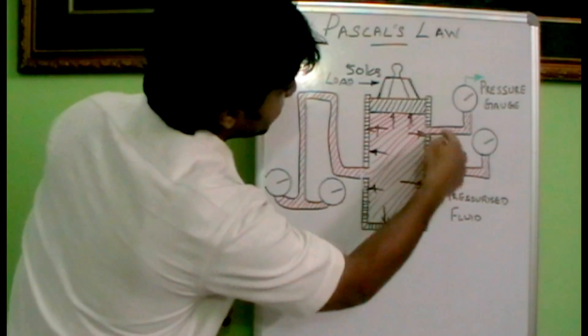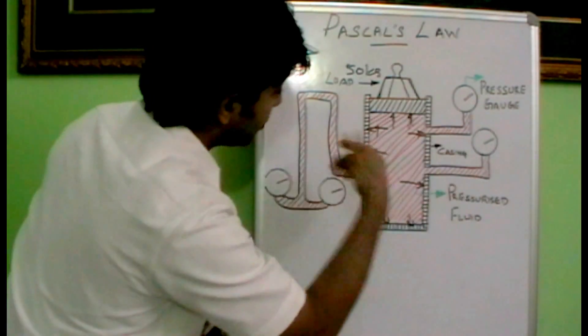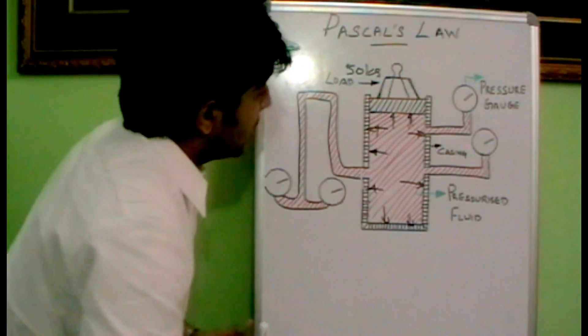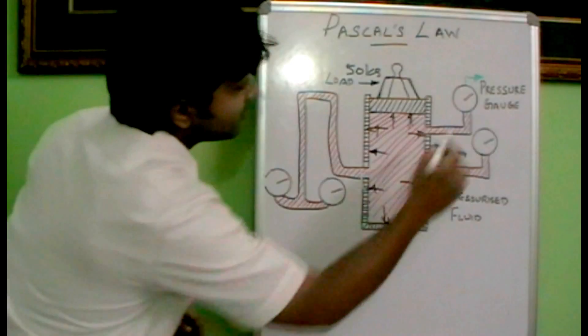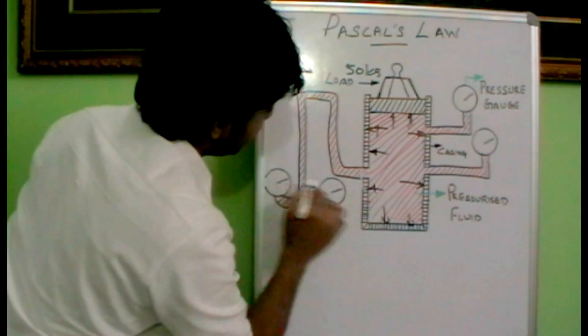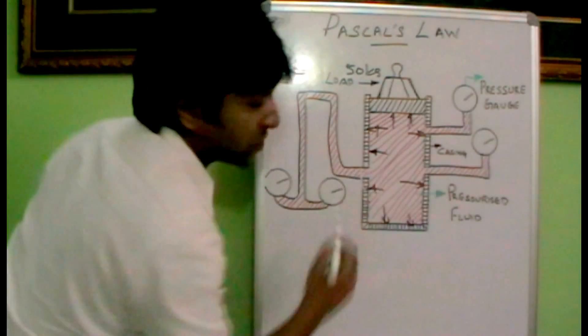We have connected two pressure gauges on the right side of the wall and two on the left side. You can see that when the load is applied, this oil is pressurized and the reading of all the pressure gauges are the same.